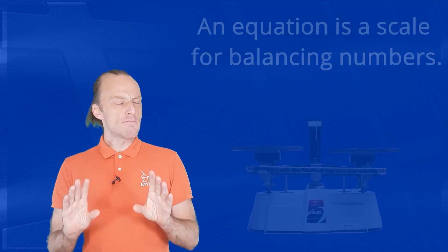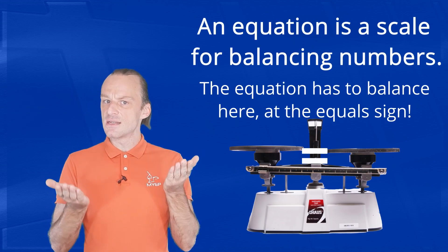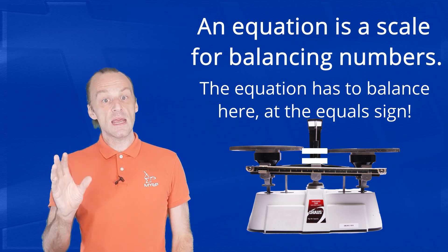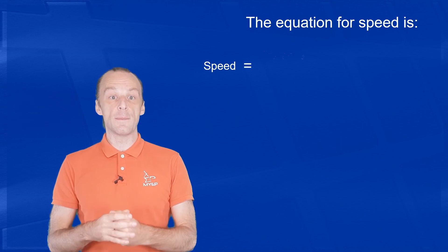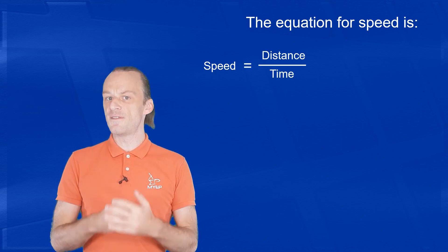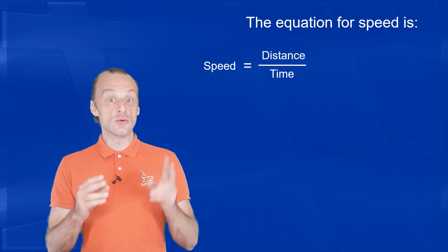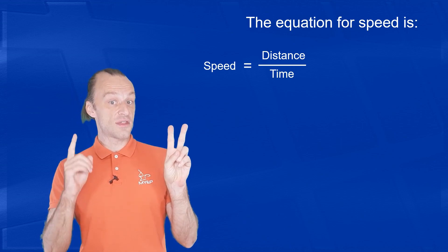Another thing we do a lot in physics, like a lot, is use equations. Remember, an equation is like a scale for balancing numbers. Speed equals distance over time. That's our equation here. And it's the simplest kind of physics equation there is. Use two numbers to give us a third number.